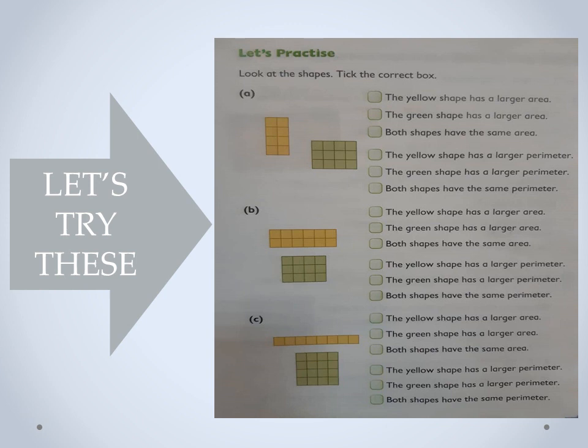Let's first find the area of the yellow shape. We have four and two — four multiplied by two is eight, so the yellow shape has an area of eight square centimeters.